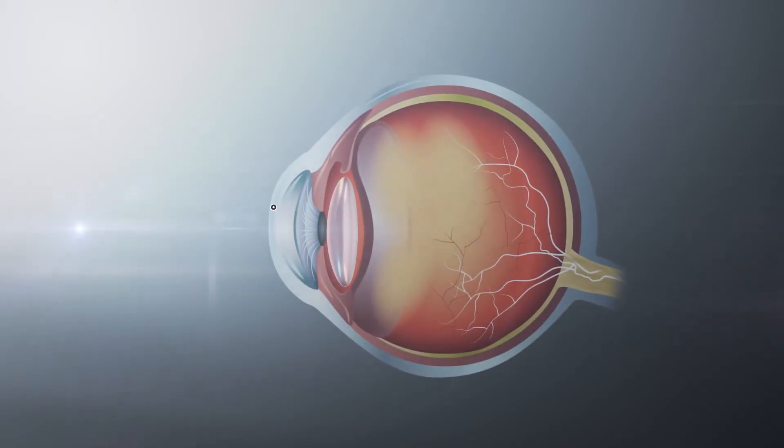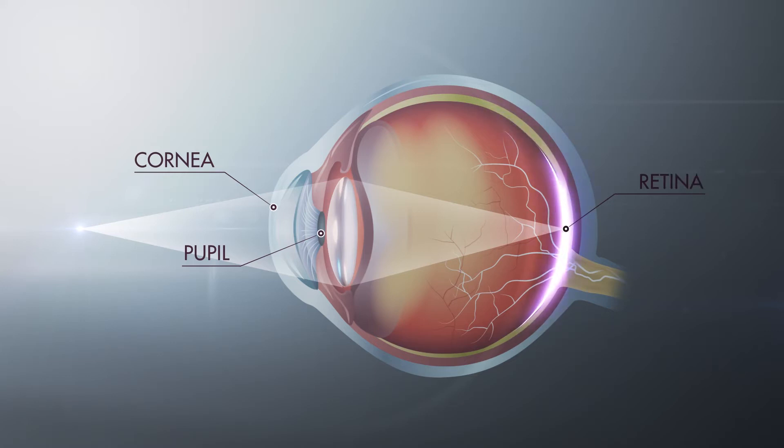When you look at an object, light passes through your cornea into your pupil, the hole in the colored part of your eye. It travels through your lens and focuses the light precisely on a point on your retina, the light-sensitive lining at the back of your eye.